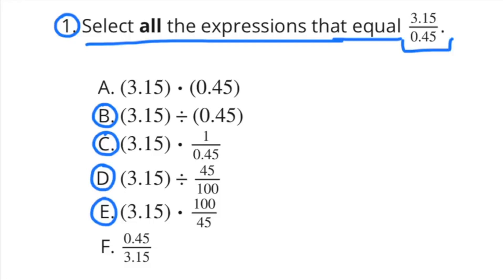We can circle C because 3 and 15 hundredths times 1 over 45 hundredths is the same thing as 3 and 15 hundredths over 45 hundredths. 3 and 15 hundredths divided by 45 over 100 is the same thing as 3 and 15 hundredths divided by 45 hundredths, so we can circle D.